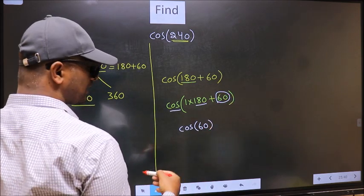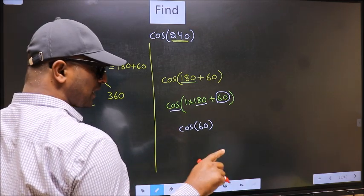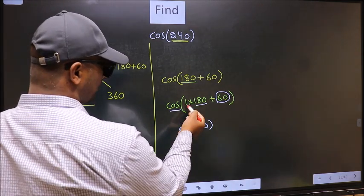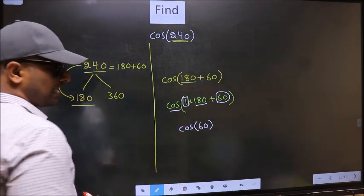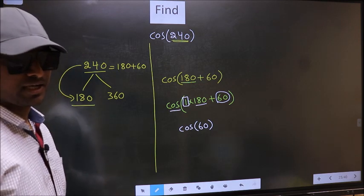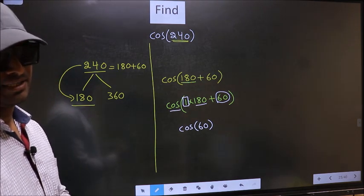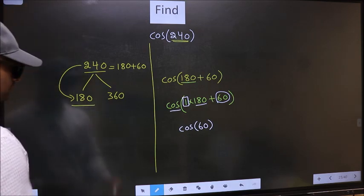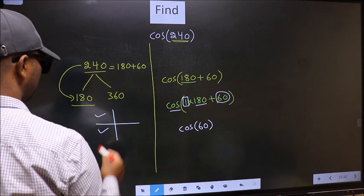Now the question is, will we get here plus or minus? To answer that, we should look at the number before 180. That is 1. And 1 is odd. And all the odd multiples of 180, they lie either in the second or in the third quadrant.